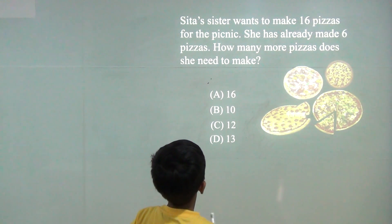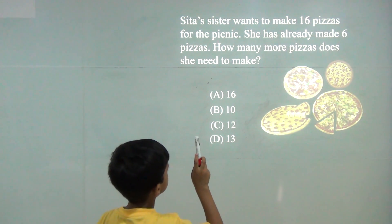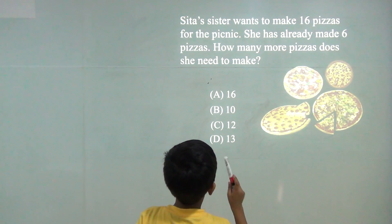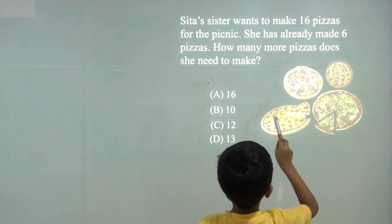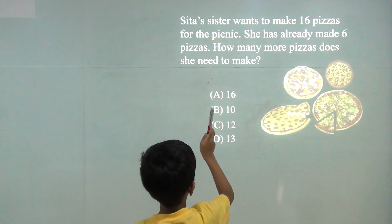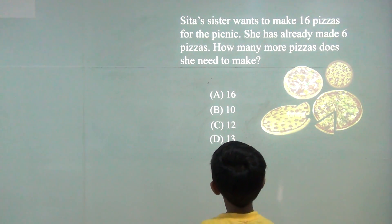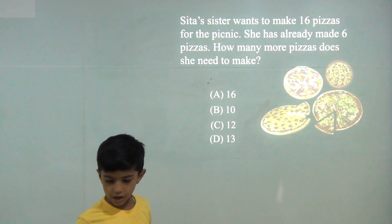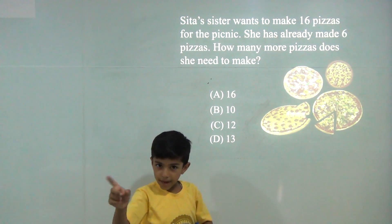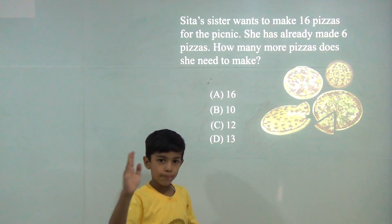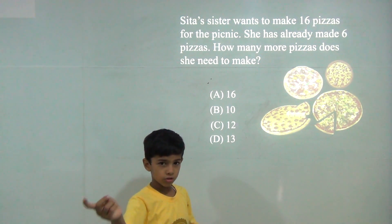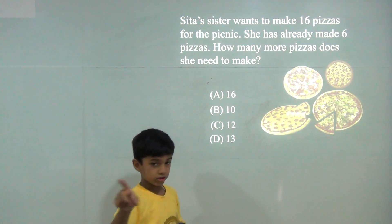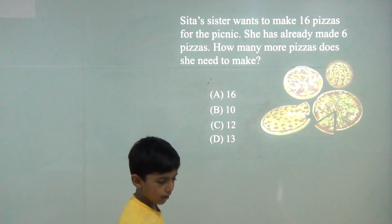Sita's sister wants to make 16 pizzas for the picnic. She has already made 6 pizzas. How many more pizzas does she need to make? 16 minus 6. 10 plus 6 is 16, so 16 minus 6 would be 10. So the answer would be 10.